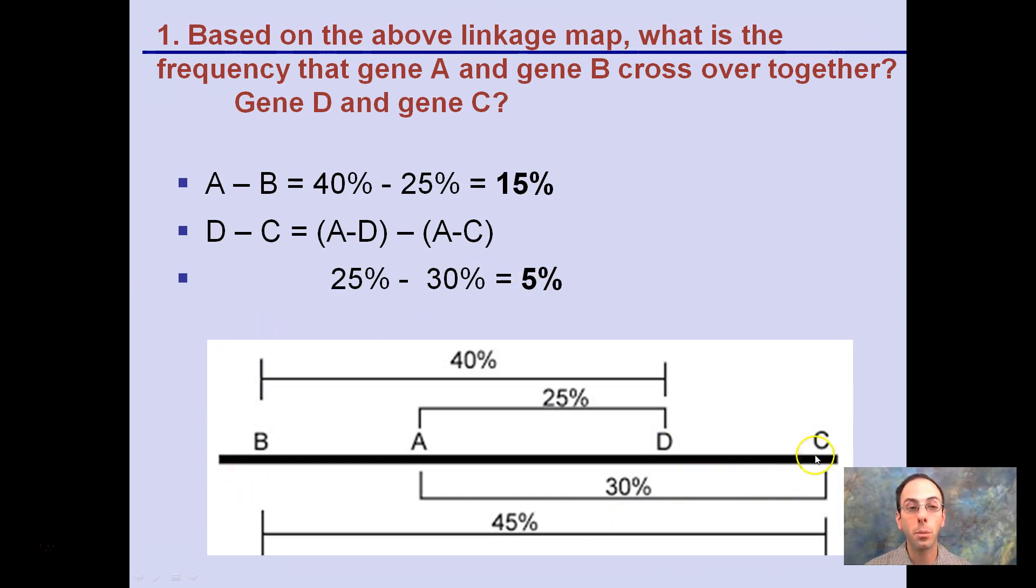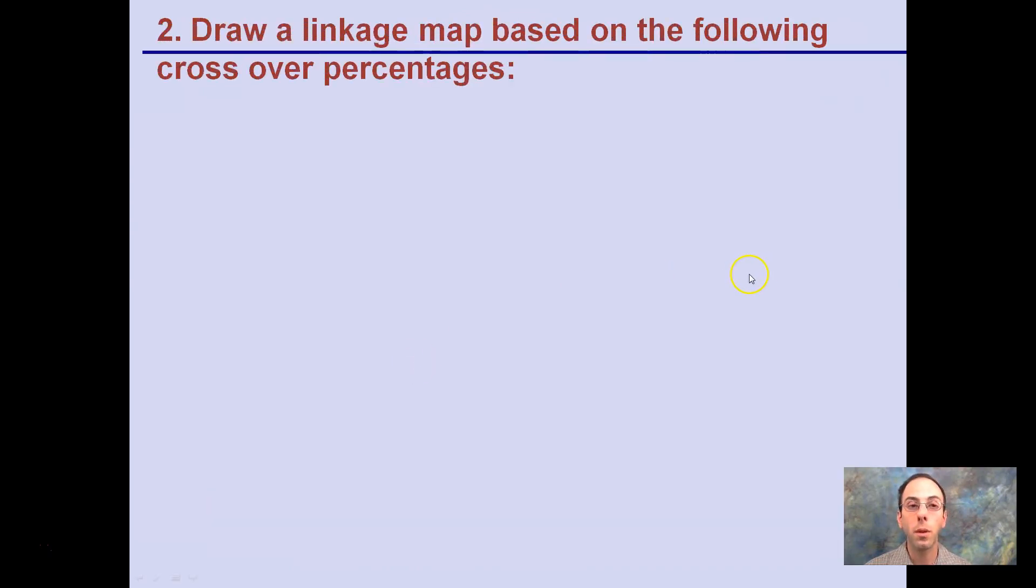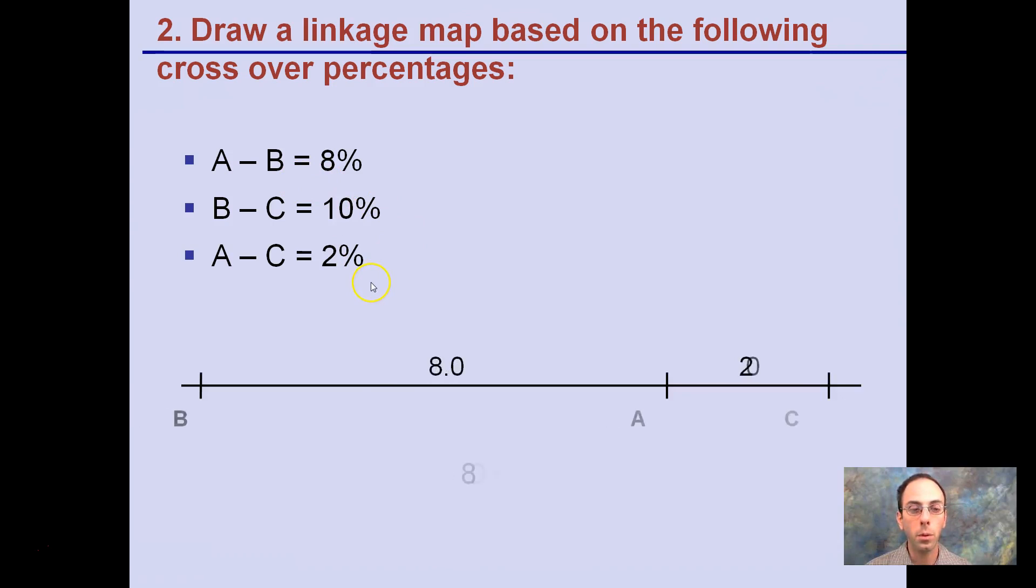Please realize that this map may not be drawn to scale, but by simply calculating these figures out, you can tell this distance based on the map is 5%, and the distance between B and A or A and B here would be 15%. The other part of that question, draw a linkage map based on the following crossover percentages: A and B is 8%, B and C is 10%, A and C is 2%. We want to know what order these are in. So I start with just drawing simple two ends, I connect them together, and I start to label. You go with the first information you've got here, and A to B would be 8%, so it's a longer distance here. B to C would be 10%, and C is 2%. We know that C is located here, not over here, because 8 plus 2 would give us that 10%, the distance between B and C.